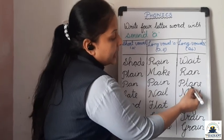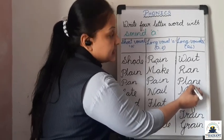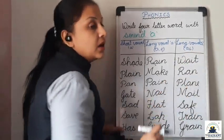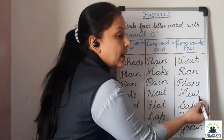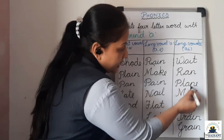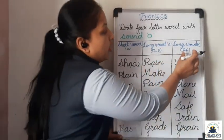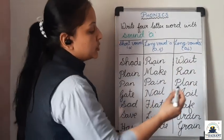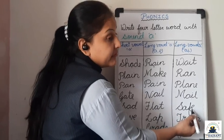P, L, A, N, E — Plane. Though it is not I here, then also we have to add the sound of I. M, A, I, L — Main. Here already I is there, and in some words it is not. S, A, F, E — Safe.